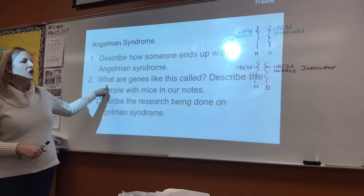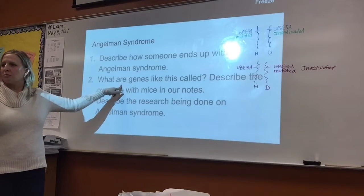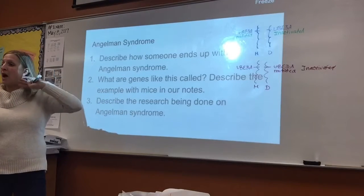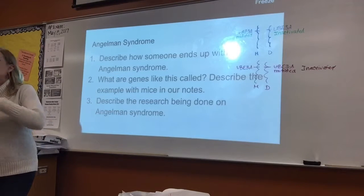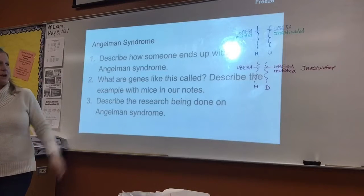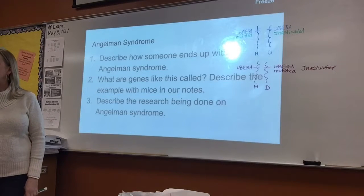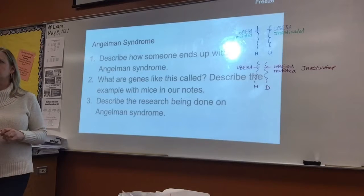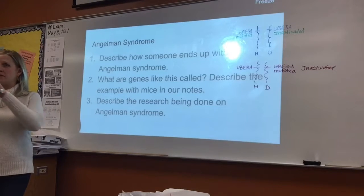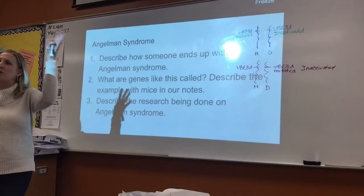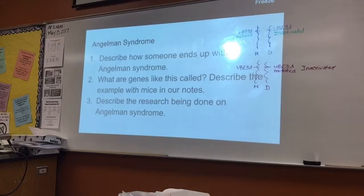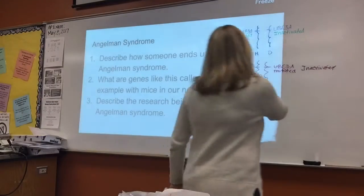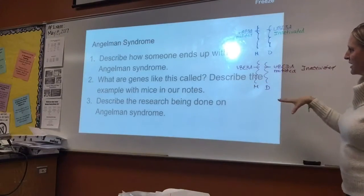So genes in general like this — where one copy either from mom or dad is silenced — are called imprinted genes. They are silenced, and another word for that is imprinted genes. This is called genomic imprinting. And this is one example in humans.